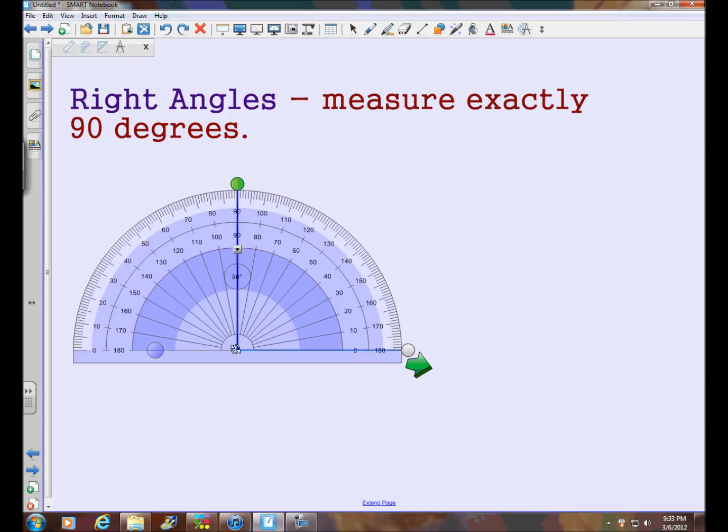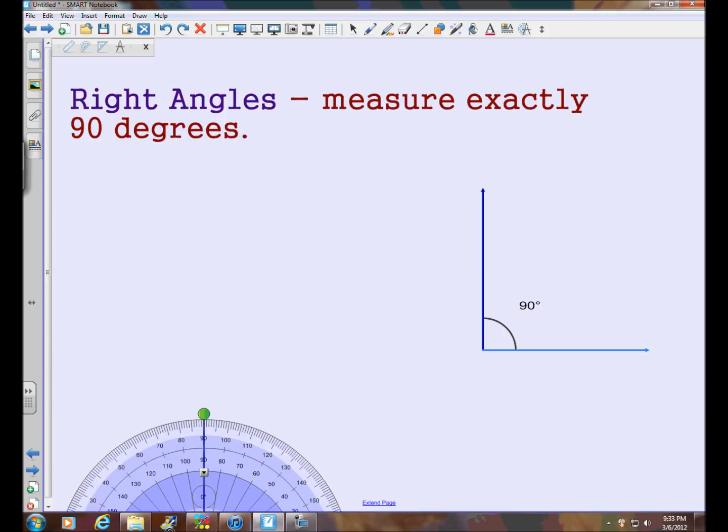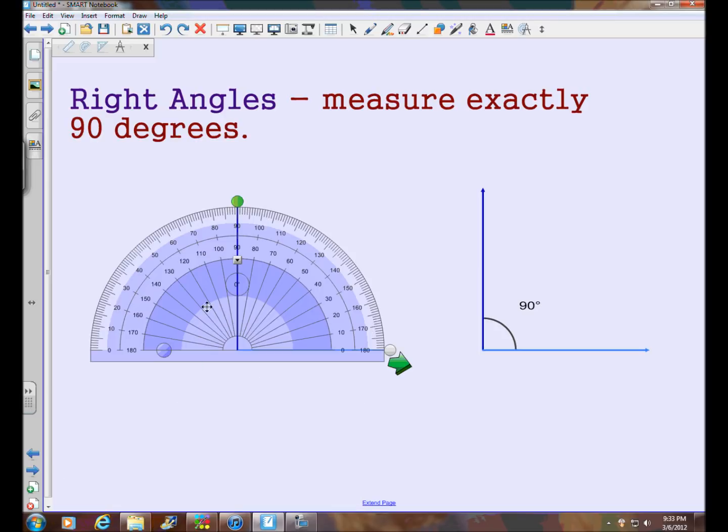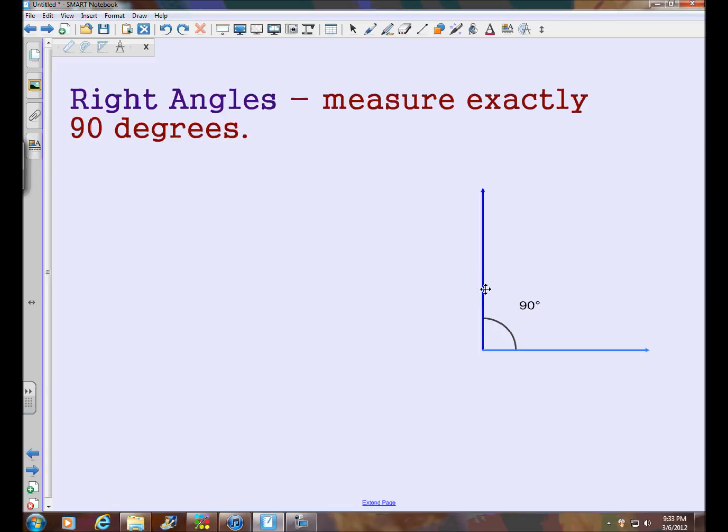So the second ray, starting at the same endpoint, extends upward infinitely and it passes through 90 degrees. And that makes it a 90 degree angle. A lot of people call these angles with square corners.